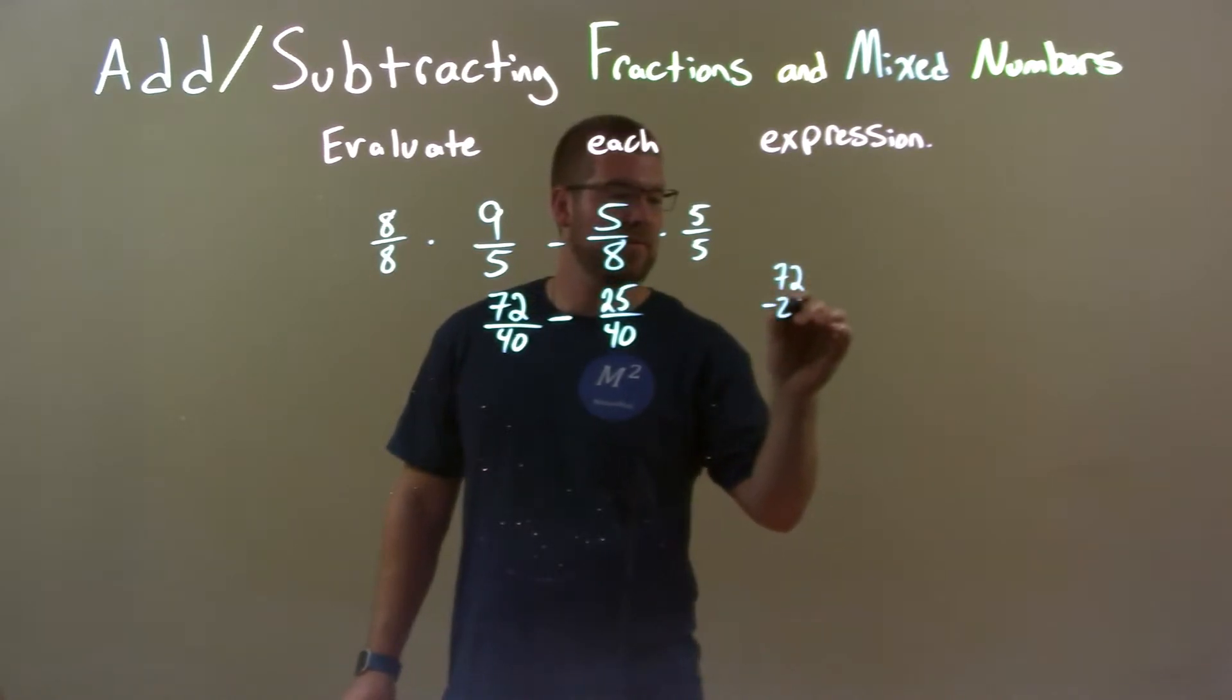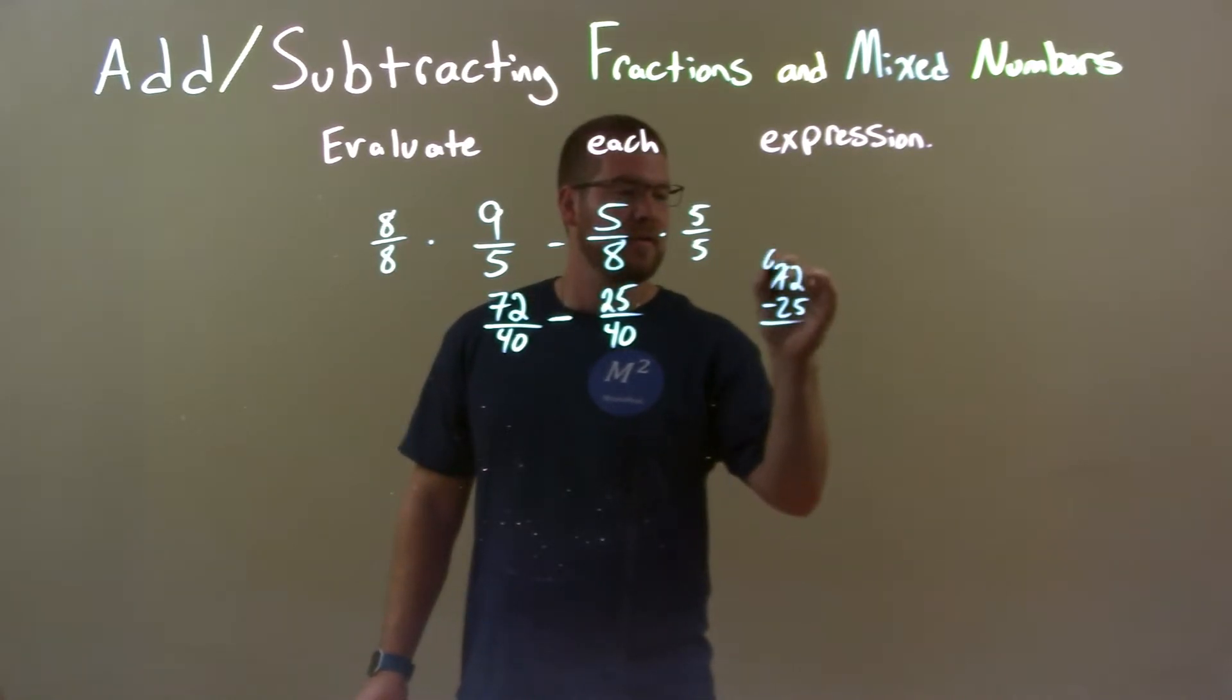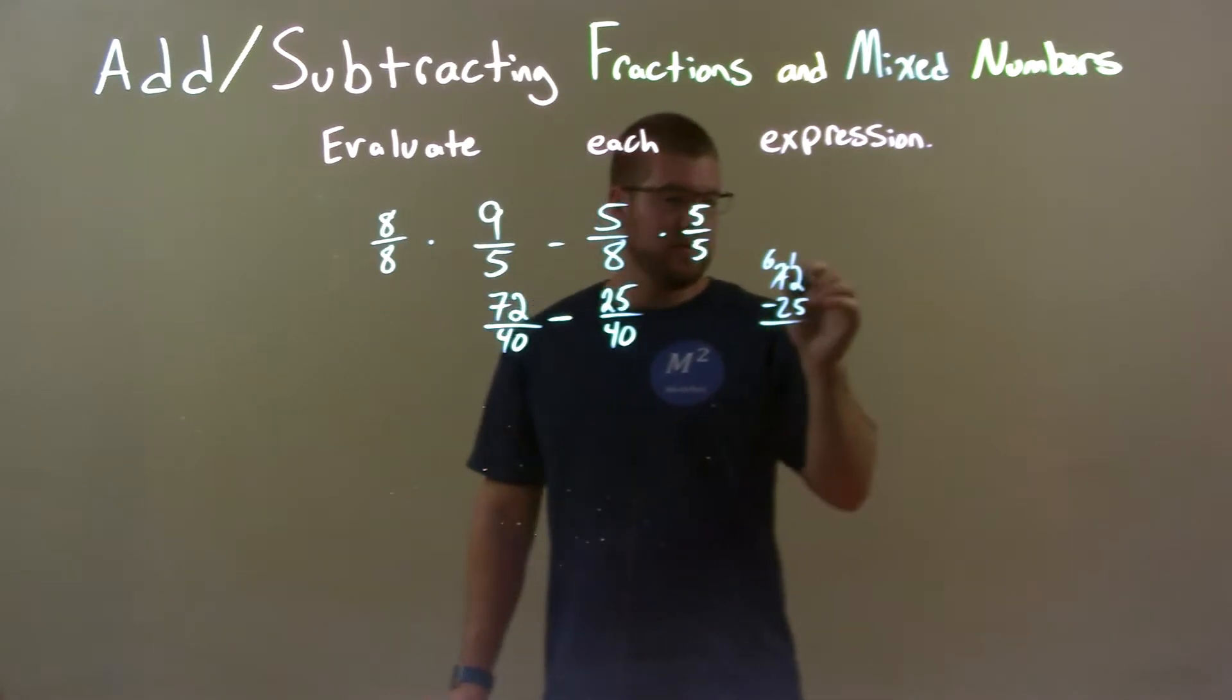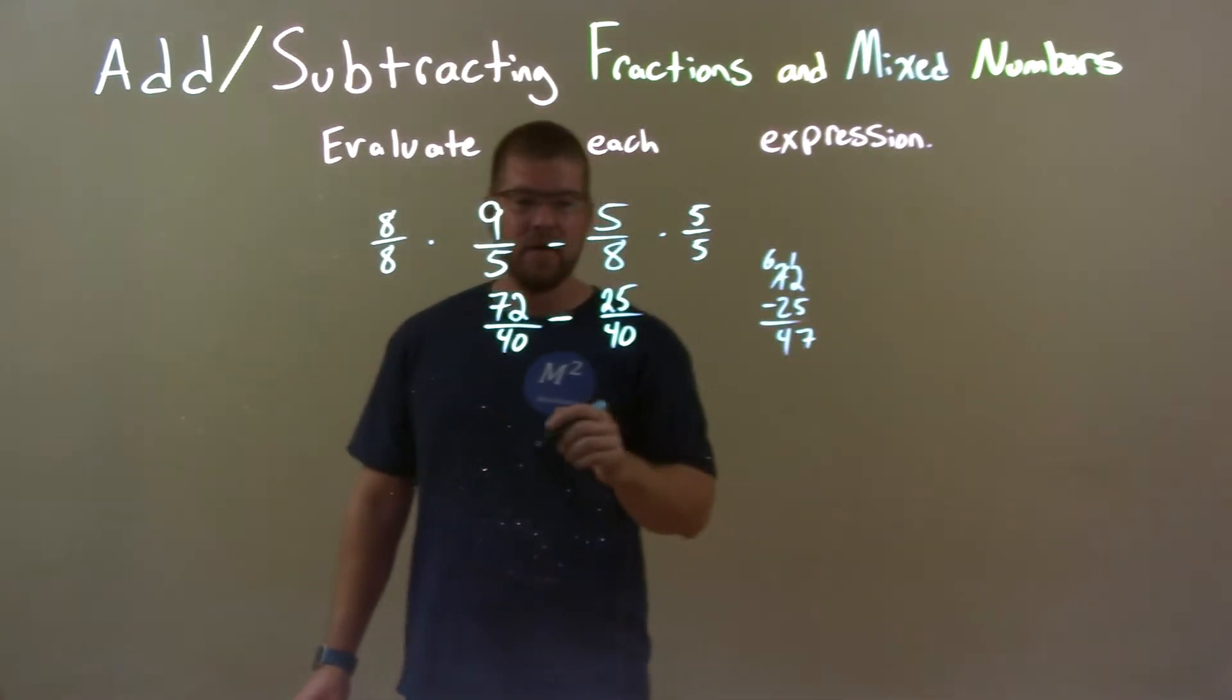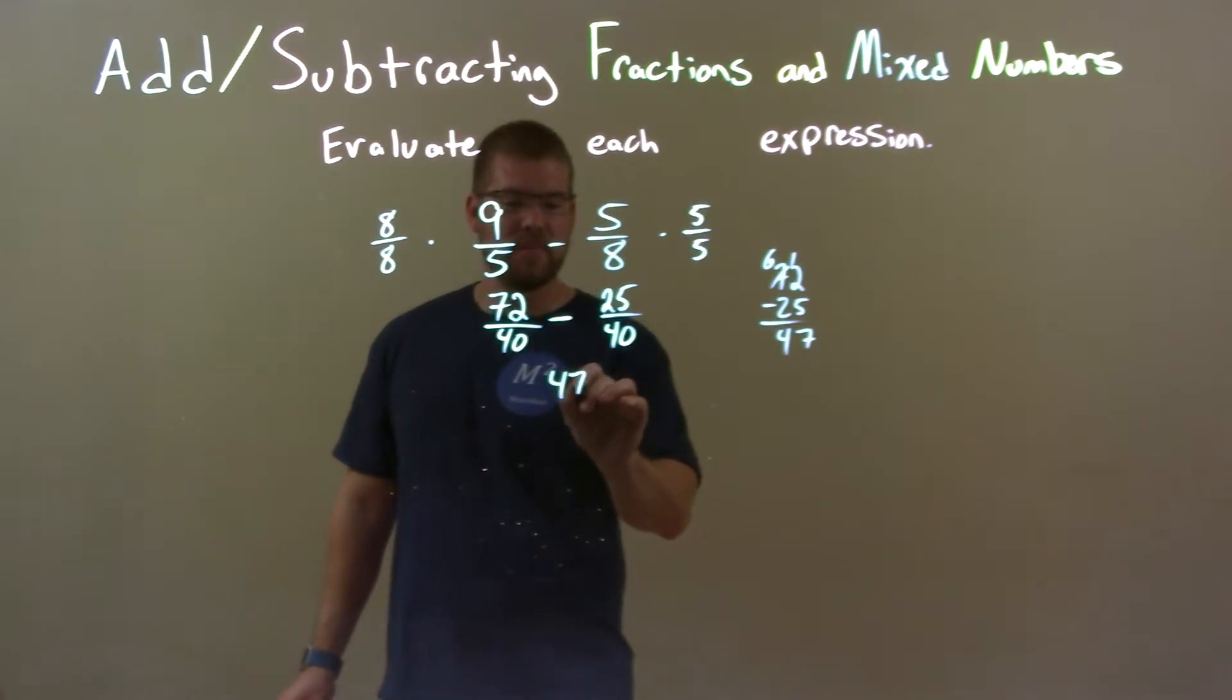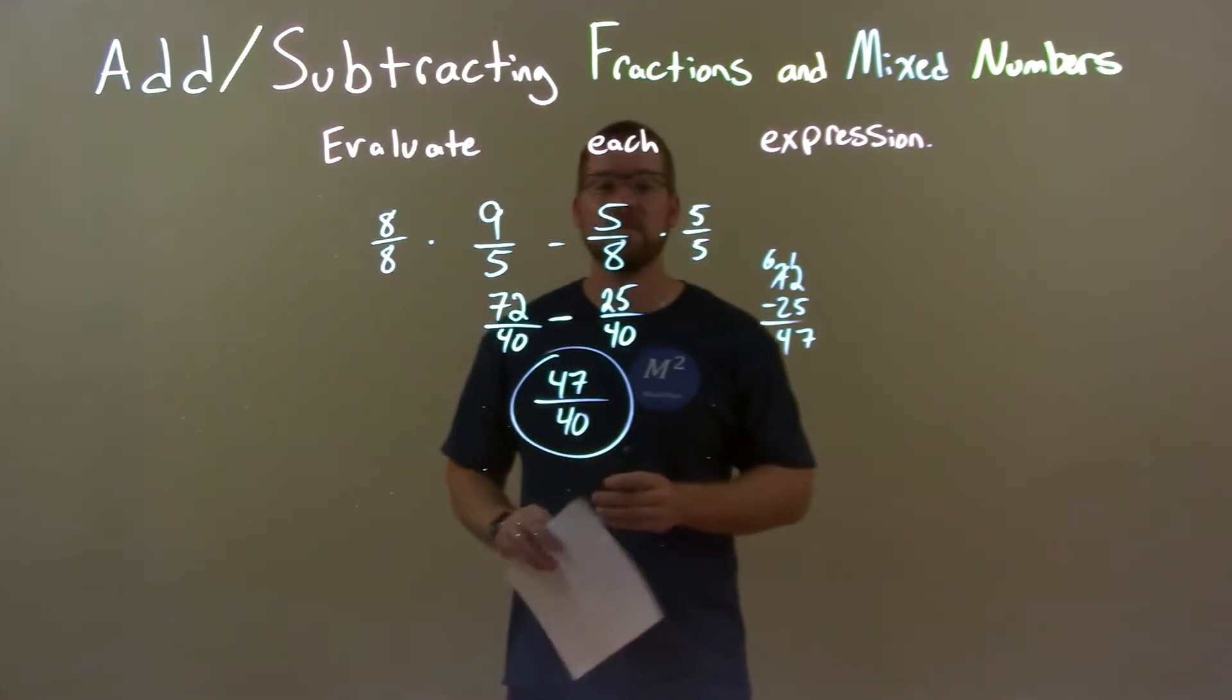But let's quickly check, 72 minus 25 here. Okay, the 1, 5, 7, that's 47. Yep, we have 47. So we have 47 up top. The denominator is just 40. And so our final answer here is just 47 over 40.